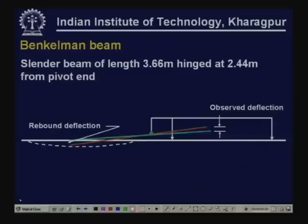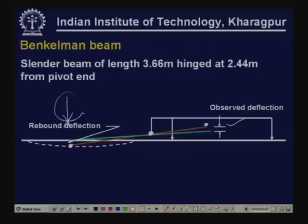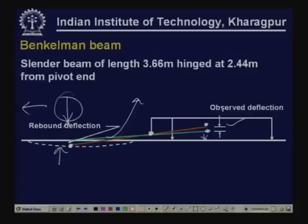Initially a load is applied and in the deflected condition the probe point rests on the pavement surface. The corresponding position of the end of the beam rotating about the hinge can be observed using the dial gauge. When the load is removed, the pavement surface rebounds — this would be the rebounded position of the beam. The end point comes down; this position is recorded using the dial gauge, and the observed difference gives the rebound deflection of the pavement.